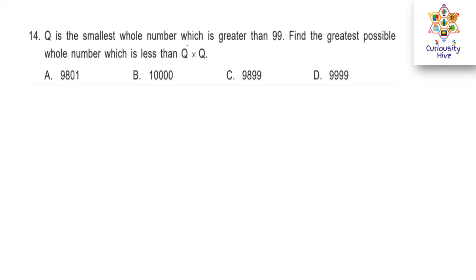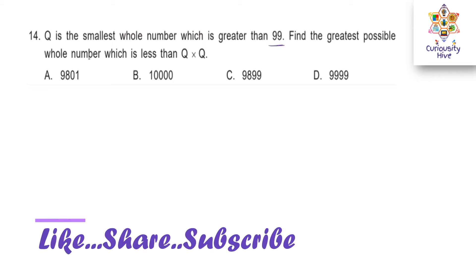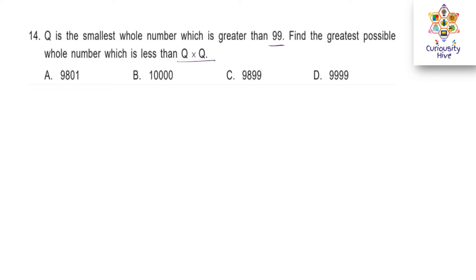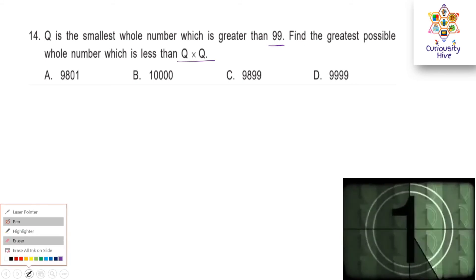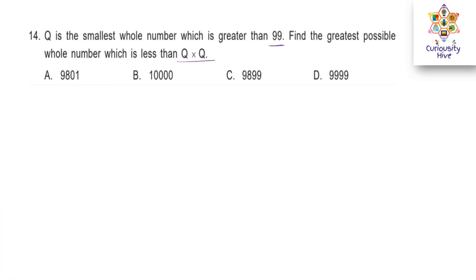Next question. Q is the smallest whole number which is greater than 99. Find the greatest possible whole number which is less than Q times Q. The number greater than 99 is 100. It is not 99.1 because that would not be a whole number. So Q equals 100.